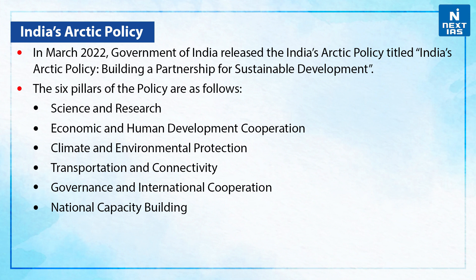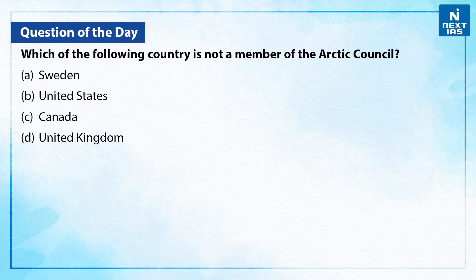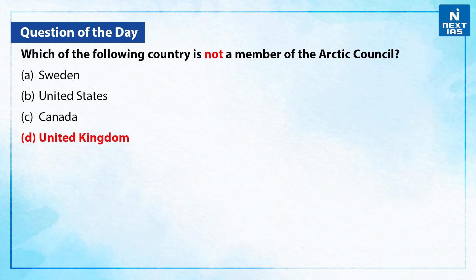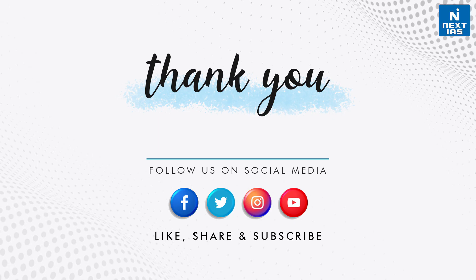That was an overview of Arctic amplification. Let's take a practice question from the topic: Which of the following countries is not a member of the Arctic Council? A) Sweden, B) United States, C) Canada, D) United Kingdom. You may take a moment and give your answer in the comment section below. The correct answer is D — the United Kingdom is not a member of the Arctic Council. I hope you liked the video and found the information useful. Check out our current affairs section on our website, and for more such videos, stay tuned to the Next IAS YouTube channel.